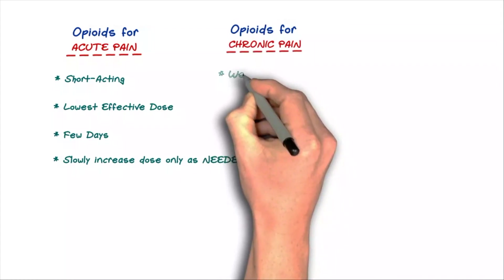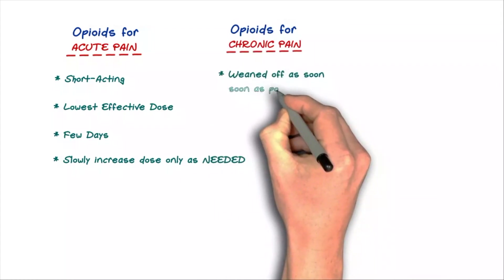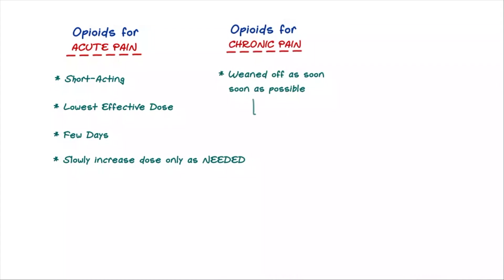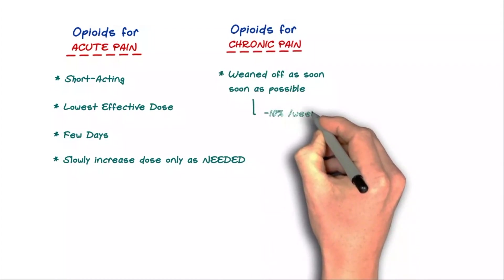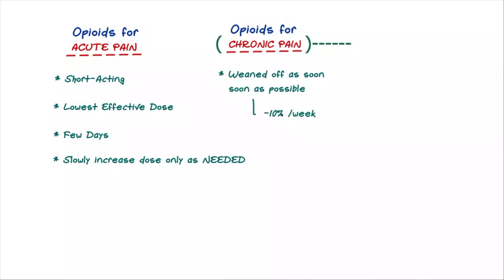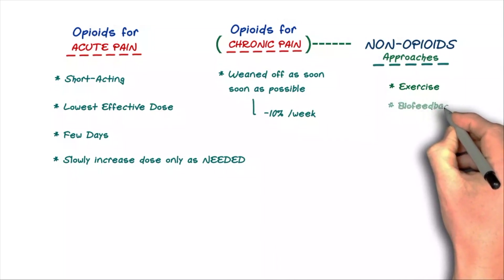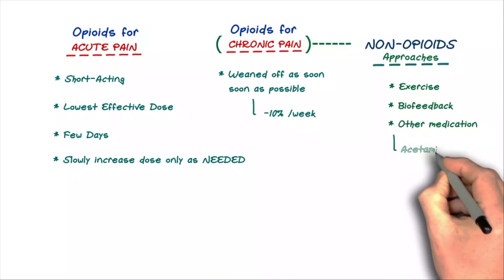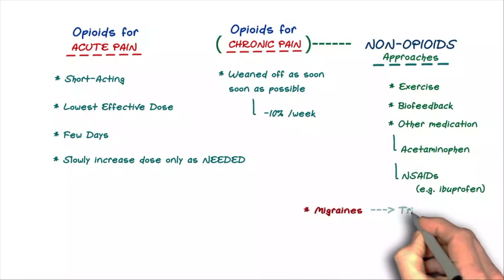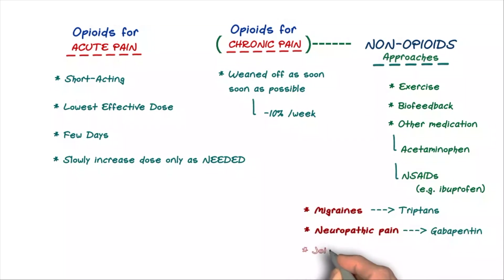When opioids are used for chronic pain, they should be weaned off as soon as possible. Ideally, at a weaned rate of 10% of the dose per week. In general though, chronic pain should be treated with non-opioid approaches. These include exercise and biofeedback as well as other types of medications such as acetaminophen and NSAIDs like ibuprofen. There are also disease-specific treatments like for migraines use triptans or for neuropathic pain use gabapentin or for joint pain topical pain treatments like capsicaine.